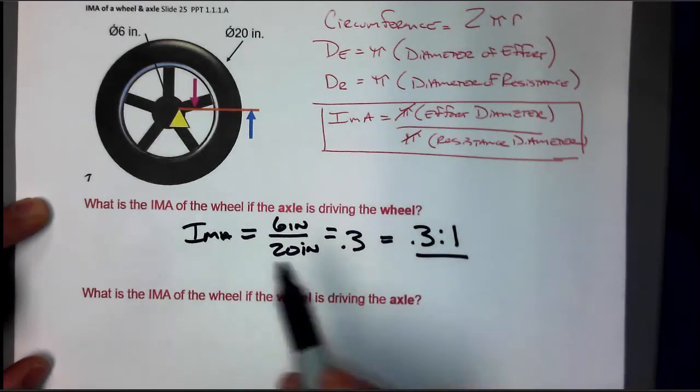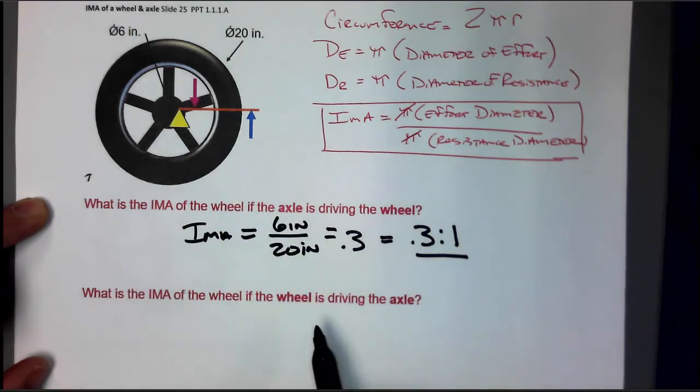And that makes sense because the axle is smaller than the wheel. Hence, the equation looks like that. So let's do it the other way too.